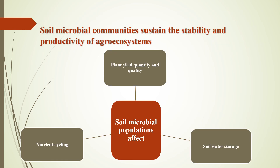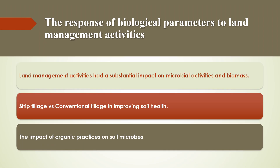Soil microbial communities sustain the stability and productivity of agroecosystems through their vital role in different ecological and physiological activities. For example, plant yield quantity and quality, nutrient cycling, and soil water storage are highly correlated with the microbial population — such as fungi, bacteria, and beneficial nematodes — all of which play an important role in enhancing plant health and soil fertility. Studies investigating the response of biological parameters to different land management activities found that fertilizer applications, crop rotation, and stable management all had a substantial impact on the mineralization of carbon and microbial biomass.